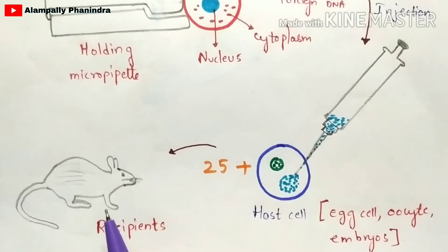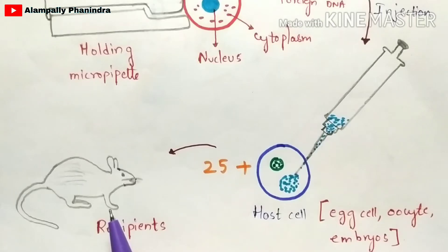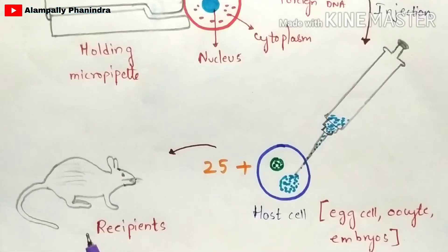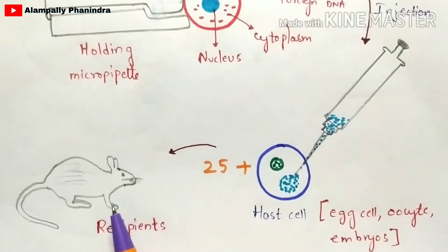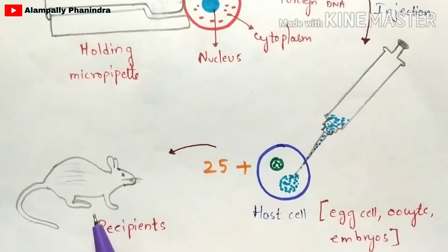The recipient animals are typically rats or mice — this technique is not applied directly to human beings. The most commonly used animals are mouse and rabbit. The implanted egg cell gets converted into an embryo, leading to the production of offspring. If it gives positive results, the microinjection technique is considered successful.